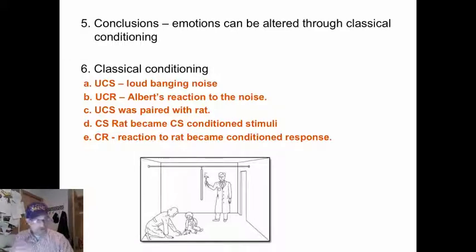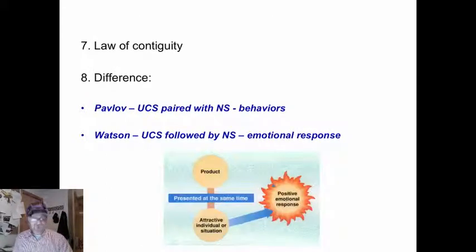The law of contiguity. Two things that follow closely in time become associated with each other. Learning occurs because of close association of events. The more times they occur together, the stronger the bond or association becomes.